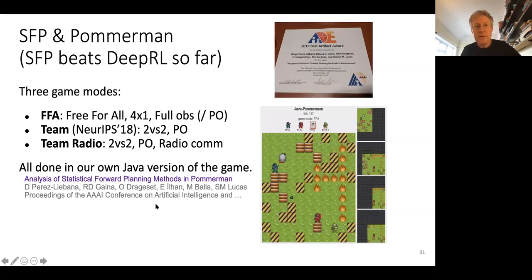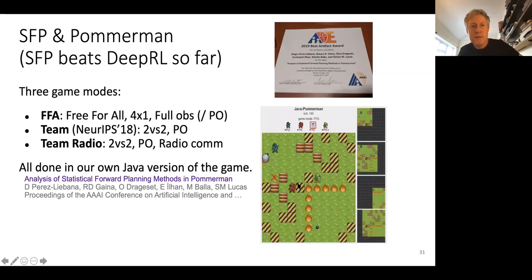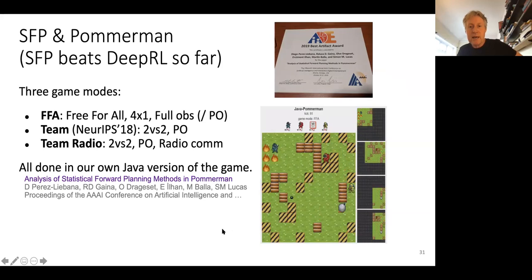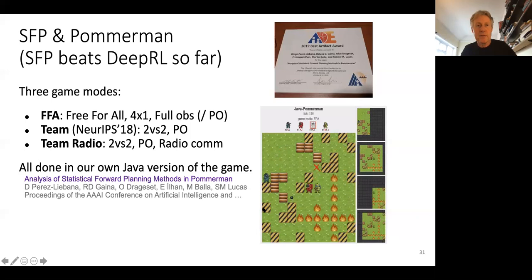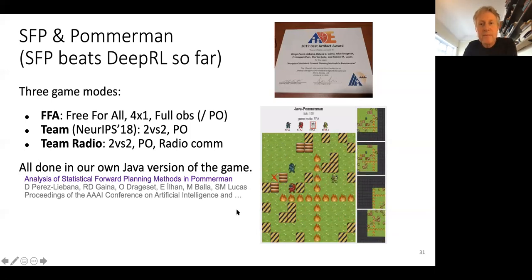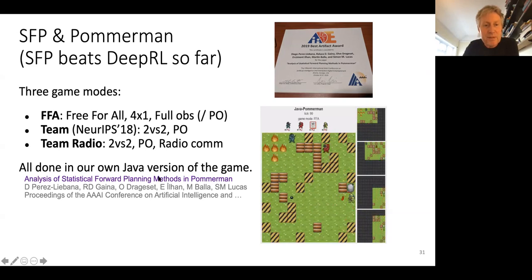Even the basic stuff, rolling horizon evolution, we found on Pomerman, which is a nice competition run for NeurIPS 2018. We found that these are quite competitive with the deep learning methods that have been submitted to the competition. We've got a whole other paper on that, which is outlined here.